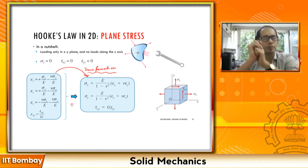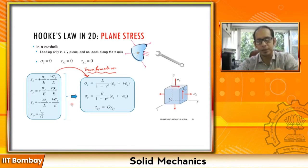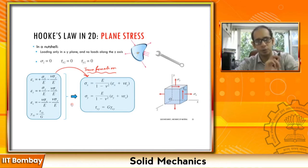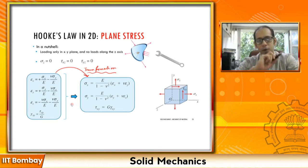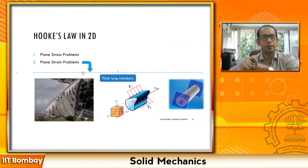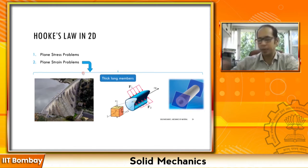So that is the case of the plane stress problem. From the name itself — the word 'stress' — we are looking at cases where stresses vanish about a particular direction. Now, can you guess what a plane strain problem is? Yes — plane strain problems are those where about a particular direction the strains are zero.